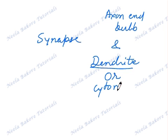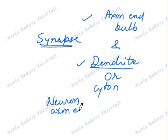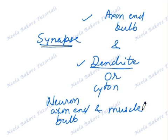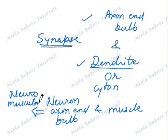If the synapse is between axon end bulb of one neuron and dendrite of another, we simply call it synapse. But if it is between one neuron, that is its axon end bulb, and a muscle fiber, then we call it a neuromuscular junction.